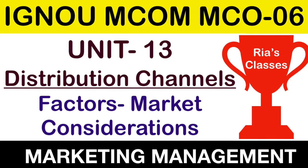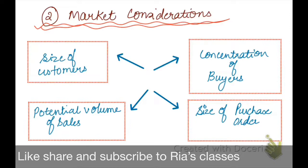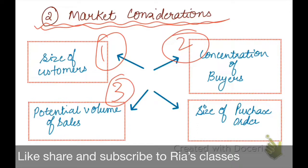Two things our producer needs to keep in mind with respect to channel choice is the market consideration — that is, what kind of make-up our market has will affect which type of channel we prefer. Under market consideration, you need to consider four things: first, size of the customer; second, concentration of buyers; third, potential volume of sales; and fourth, size of purchase order.